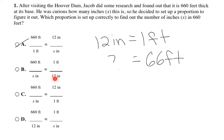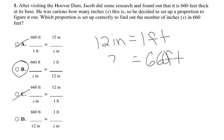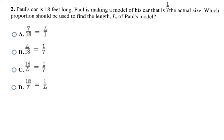In choice B, one foot and 12 inches are on the same side, and 660 feet with X are on the same side — so B is correct. Choice C has feet and inches both on top, which is wrong. Choice D has the units aligned, but the one foot is on the right and 12 inches on the left — they must be on the same side. So the answer is B.